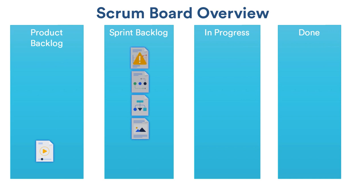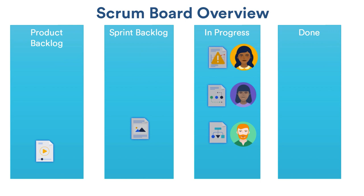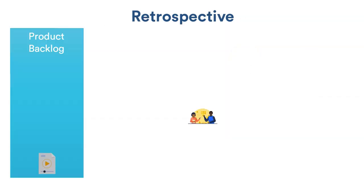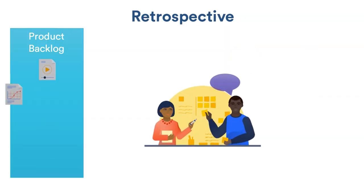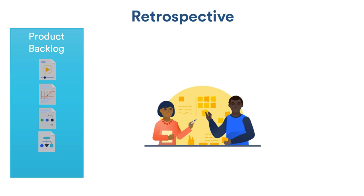These items, once added to the sprint backlog, function as an active to-do list from which the team works. Once the sprint is finished, the team typically holds a retrospective meeting to assess the work completed. At this meeting, the team might adjust the product backlog to reflect findings such as incorrect estimations or other inefficiencies before beginning another product iteration in the next sprint.